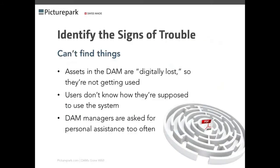Identifying the signs of trouble. First, you can't find things — assets in the DAM are digitally lost, which is a term Jake coined. So they're not getting used. Users don't know how they're supposed to use the DAM system, and DAM managers are asked for personal assistance too much.